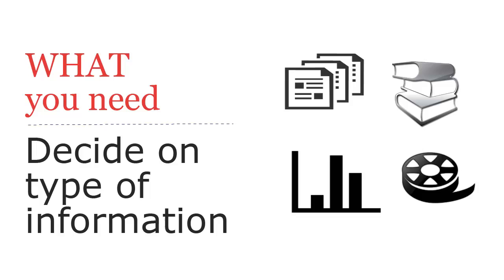Once you have a clear topic, think about what types of information you need to find. This will really depend on the topic. Scholarly articles are common, but books are useful for broader topics in getting an overview and are more common in some areas. You might need data and statistics, business information, or a primary source like a film or diary that you'll be analyzing.